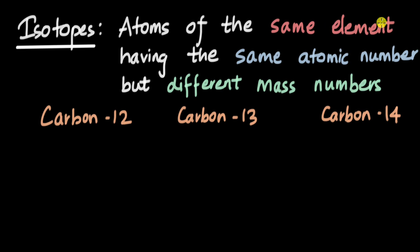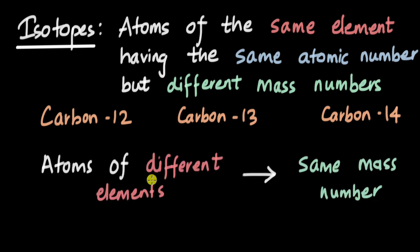Now atoms of the same element can have different mass numbers, but can atoms of different elements have the same mass number? Well, it turns out some atoms of different elements do have the same mass number, and they are called isobars.